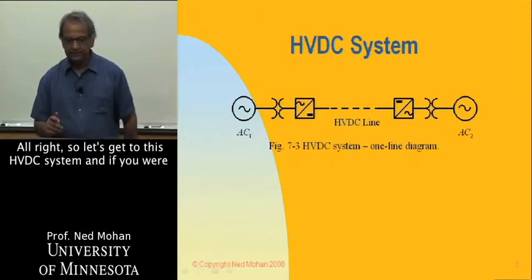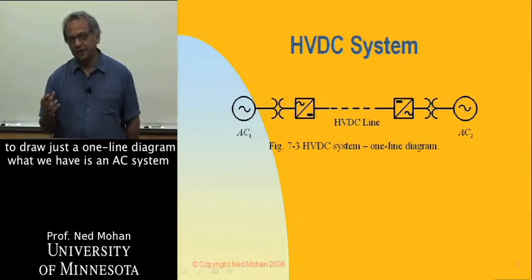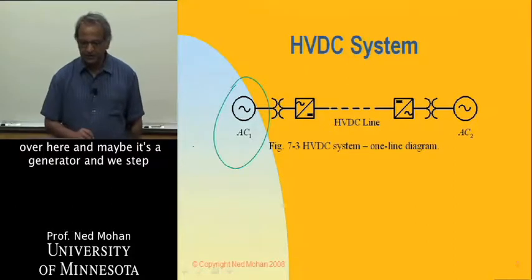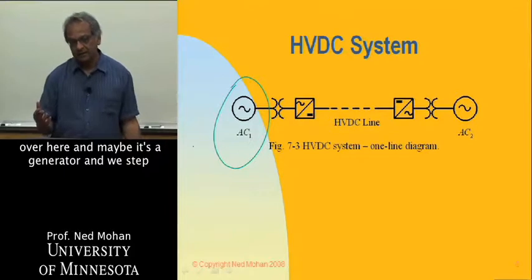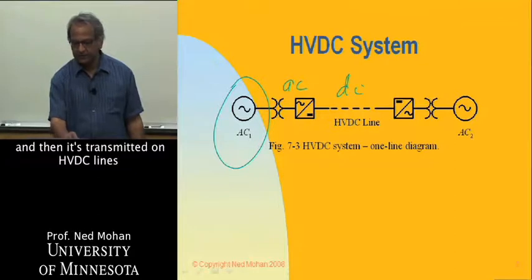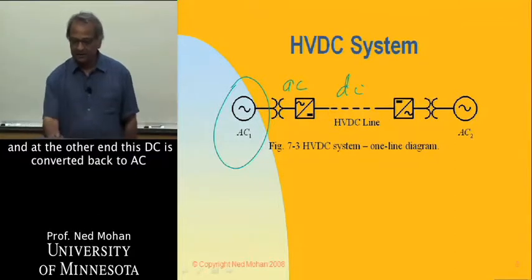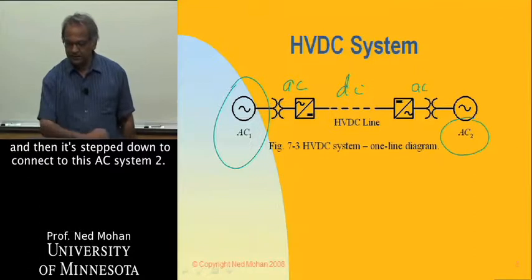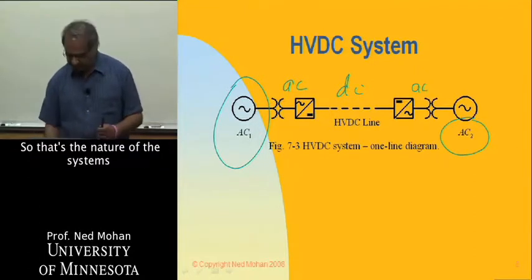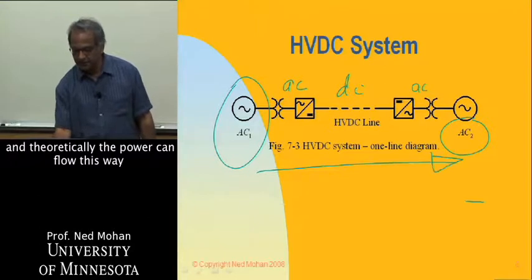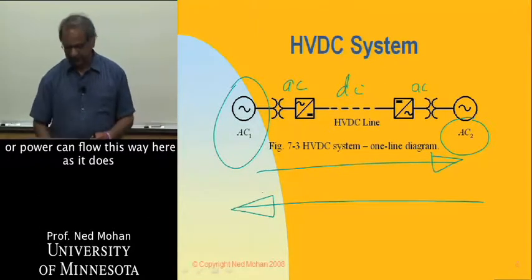If you were to draw just a one-line diagram of an HVDC system: we have an AC system on one side, perhaps a generator, and we step up the voltage by means of a transformer. Then this AC voltage is rectified into DC, transmitted on HVDC lines, and at the other end this DC is converted back to AC and stepped down to connect to another AC system. Power can flow in either direction, as it does in many of these lines.